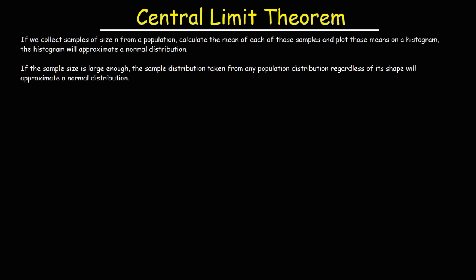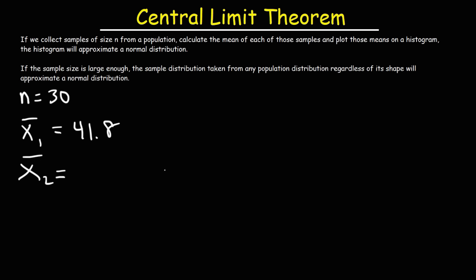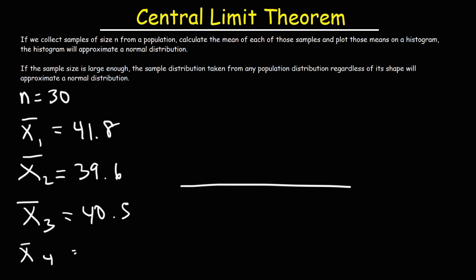For example, imagine you have 100,000 people in a town and you choose a sample of 30 individuals, then calculate the mean age. Let's say it's 41.8. Then you calculate the mean of another set of 30 individuals — say it's 39.6. You take another sample of 30 people and get 40.5. If you repeat this process and plot all these means on a graph, the graph will have the shape of a normal distribution.